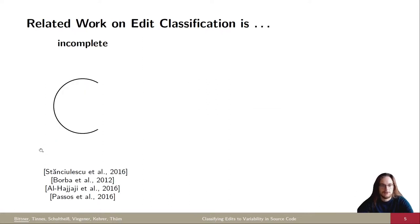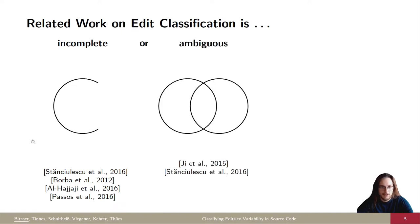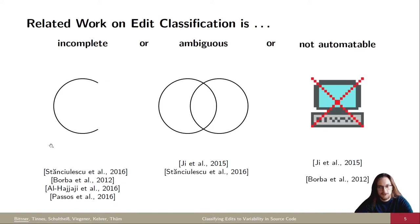Of course, there's related work on edit classification, but it has three key drawbacks. First, some work is incomplete, which means there's edits that cannot be explained or classified. Or it's ambiguous, which means there's edits for which there exists more than one explanation. Or it's not automatable, for example, because classifications are given in natural language.